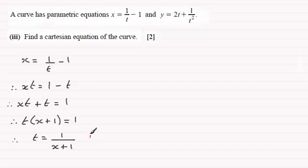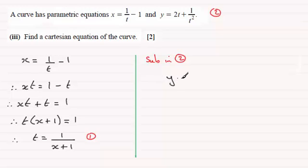We'll just mention that in here: sub in this equation up here, let's call this equation 2. Sub in equation 2, and if we do that, what we get is y equals 2 times t, which is 2 times 1 over x plus 1, and then plus 1 divided by t squared. So that's going to be 1 all over x plus 1 squared.